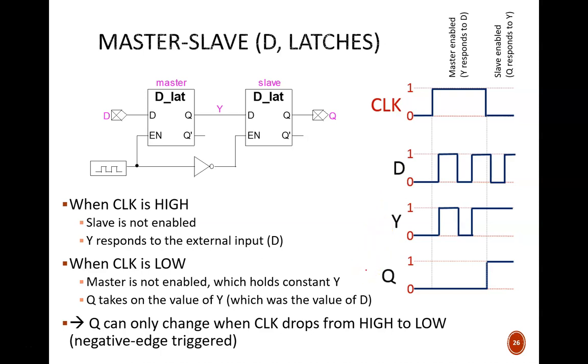While the clock is high, the master latch is enabled and the slave latch is disabled, due to this NOT gate inverting the high signal. This means that any changes in D are almost immediately passed through the master latch, but not the slave latch. This is why, during this high clock period, the Y value changes, but the Q value stays the same.